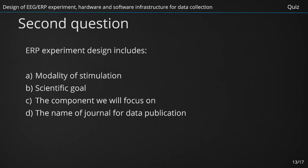ERP experiment design includes: A: Modality of stimulation. B: Scientific goal. C: The component we will focus on. D: The name of journal for data publication. The right answers are A, B, and C.